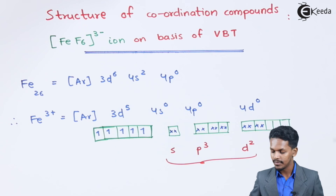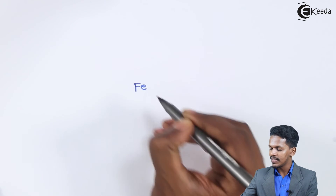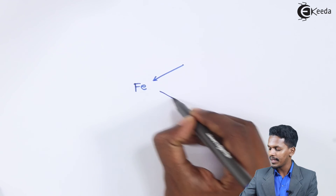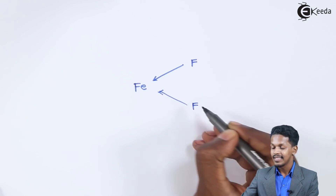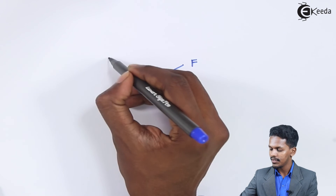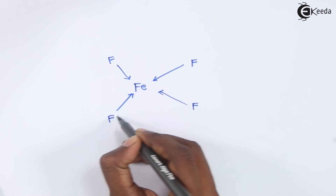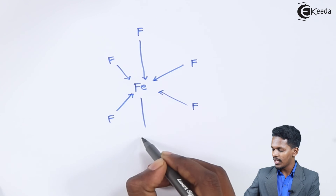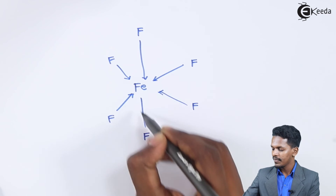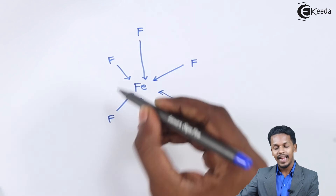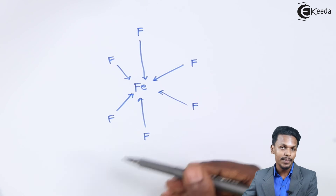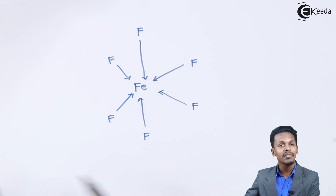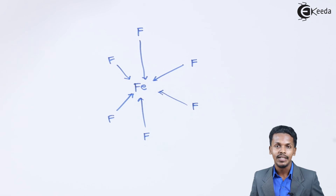The structure of this molecule has Fe at the center, surrounded by six fluorine atoms as ligands. Four fluorine atoms are on the plane, one is above the plane, and one is below the plane — making the structure an octahedral geometry.